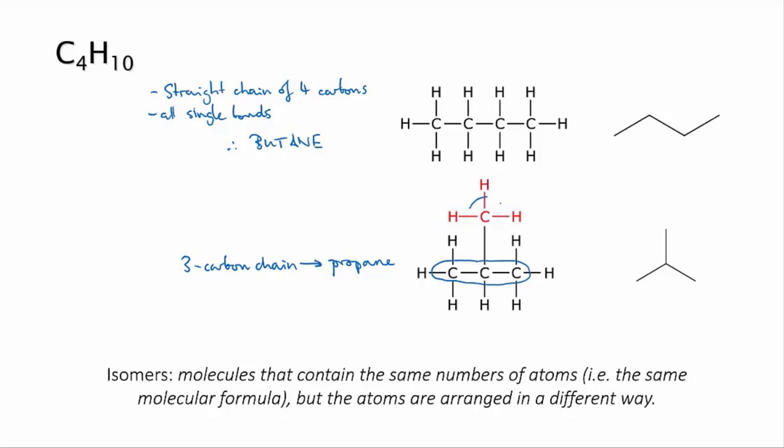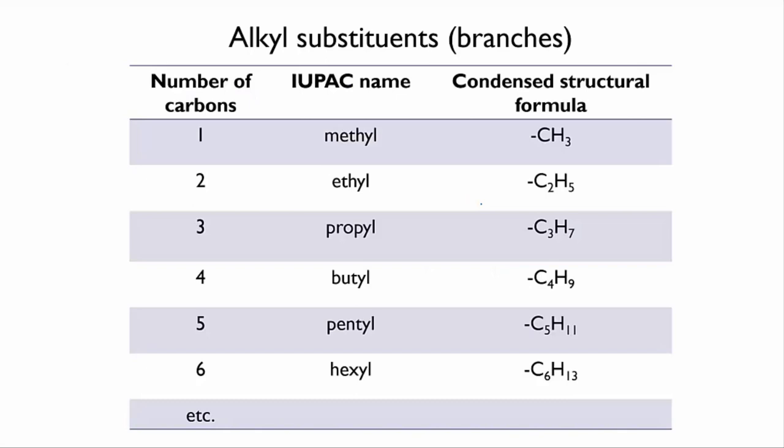Okay, but what about this little branch? The naming of branches, also called substituents, follows the same pattern as the alkanes. Except this time we put YL on the end of the word to indicate that it's a branch and not a whole molecule.